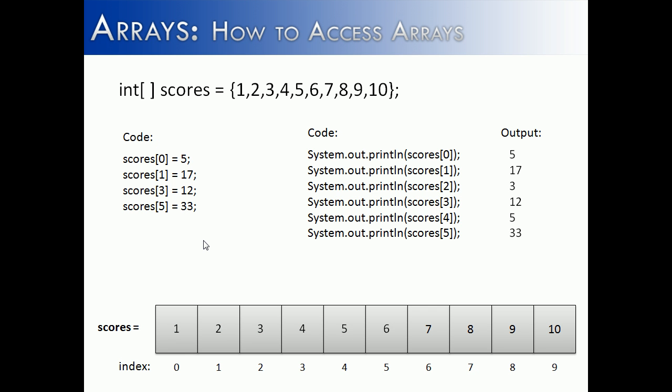To sum up this video, what we talked about is how to access an array. Both how to insert information inside of there, by using the name of the array, the index that we want to insert, and then the values. And those go to the different indexes and change the values. And then, if we want to access those values, or access something in the array, we simply have the array name, and then we put the index that we're trying to access. What's at index 0? A 5.